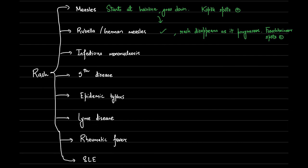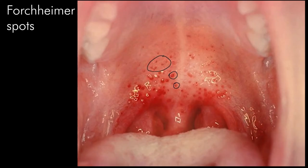Rubella or German measles also spreads from the hairline downwards, but unlike measles the rash disappears from the original sites as it migrates. Forchheimer spots are pinpoint or larger petechiae in the soft palate. They are non-specific as they are also seen in infectious mononucleosis, scarlet fever, and Zika virus infection.